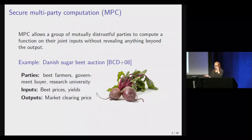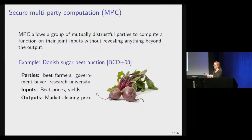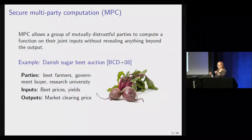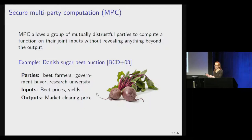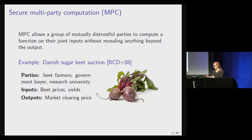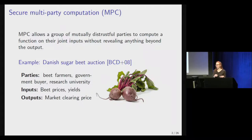This is more interesting with an example. We'll start with the classic example, which is the Danish sugar beet auction. In Denmark, all the sugar beet farmers sell their wares to a single government buyer every year. They submit their bids and then you compute a market clearing price. But when you're selling to the same buyer every year, you might start to reveal information about your farm that you don't want to be revealing. So in 2008, they used MPC to compute this market clearing price while keeping all their bids private. This is cool, but it's almost 15 years ago now.